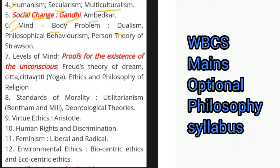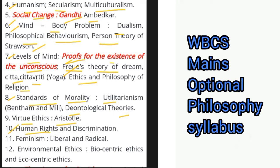Then mind-body problem: dualism, philosophical behaviorism, person theory of Strawson. Then levels of mind, proofs for the existence of the unconscious, Freud's theory of dream. Then Chitta, Chitta Vritti, ethics and philosophy of religion. Then we have standards of morality — utilitarianism, deontological theories, virtue ethics, Aristotle. Then human rights, discrimination, feminism — liberal and radical. Then environmental ethics, biocentric ethics and ecocentric ethics.